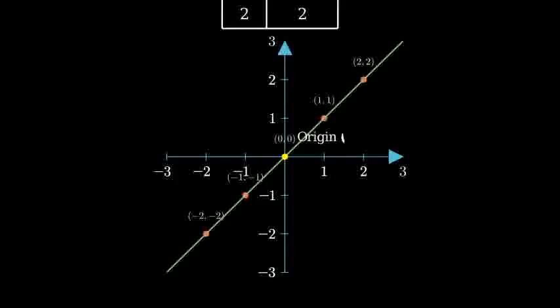First, it passes through the origin 0, 0. Second, it makes a 45 degree angle with the x axis. And third, it has a slope of 1, meaning that for every 1 unit we go right, we also go up 1 unit.